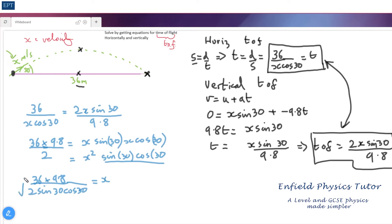So then we get 36 times 9.8 over 2 sin(30) cos(30), and of course that's x squared. So in order to get x we're going to have to do the square root of that. When you chuck all that lot into your calculator and press equals and do it a couple of times to check it, you're going to get an answer along the lines of 20.2 meters per second.